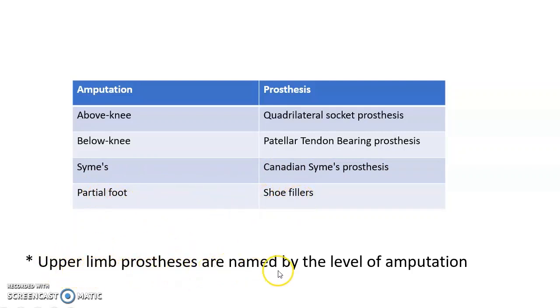Upper limb prostheses are named by the level of amputation. For example, above elbow prosthesis and below elbow prosthesis.